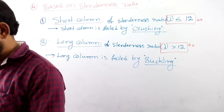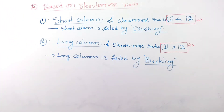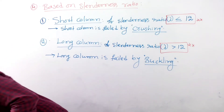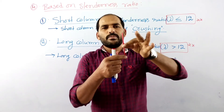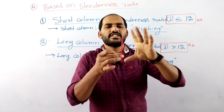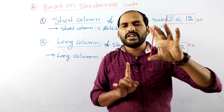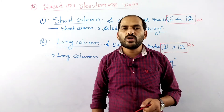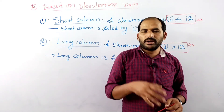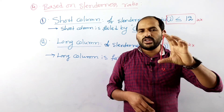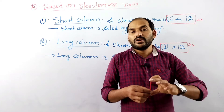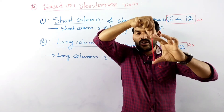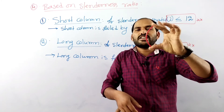What is meant by buckling? If you take a long column — slenderness ratio more than 12 — it stands in the vertical direction. Due to the application of external load, displacement occurs and this column is bent like this. Short column fails by crushing: it is pressed and powder or cracks are formed. Long column fails by buckling: the column bends laterally and it fails.